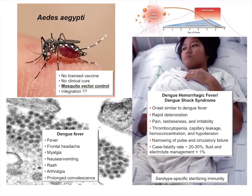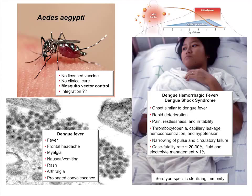The only way we have to control dengue right now — and it's the same with Zika and chikungunya — is mosquito control. There's no licensed vaccine, though people are working on one. It's been difficult to develop a vaccine against four viruses at the same time, but they are in the works. There's no clinical cure, so we rely on mosquito control. Ultimately what we'll want to do is integrate interventions: not just different types of vector control, but combining vaccines and vector control.